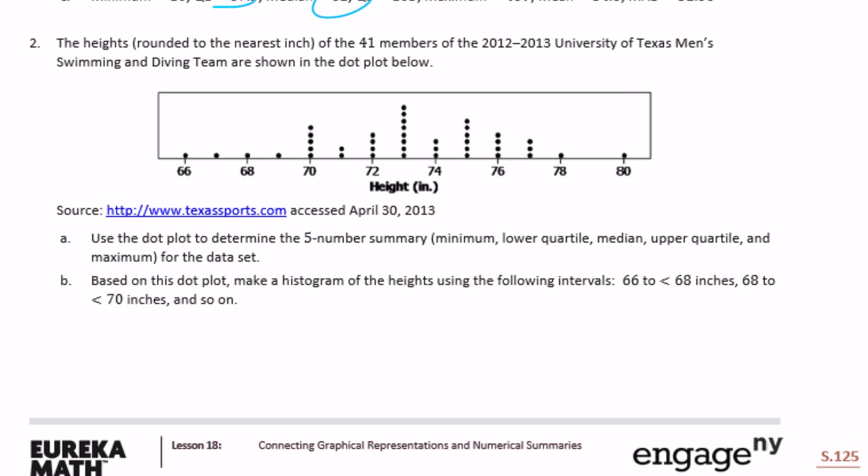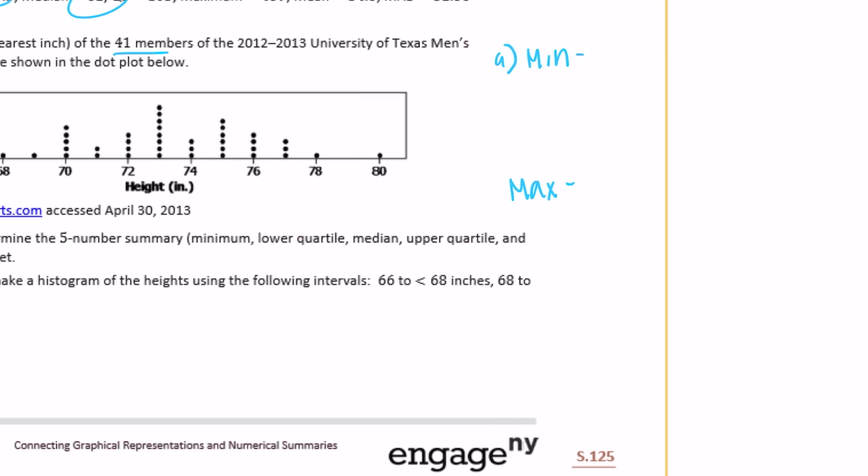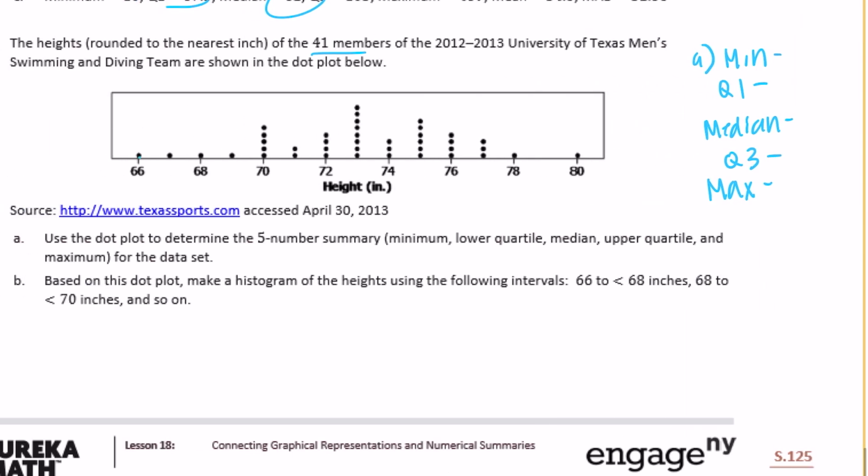Number two. The heights rounded to the nearest inch of the 41 members of the 2012-2013 University of Texas men's swimming and diving team are shown in the dot plot below. So there's 41 members, 41 dots are shown there, one for each member. Use the dot plot to determine the five-number summary: minimum, lower quartile, median, upper quartile and maximum for the data set. For A, let's start with minimum and maximum. Minimum 66, maximum 80.